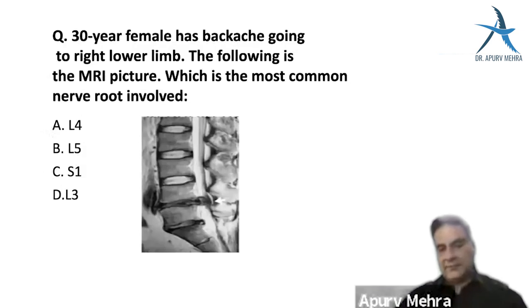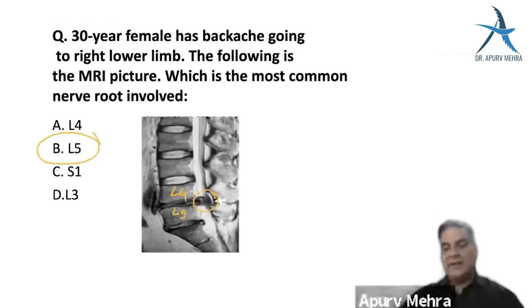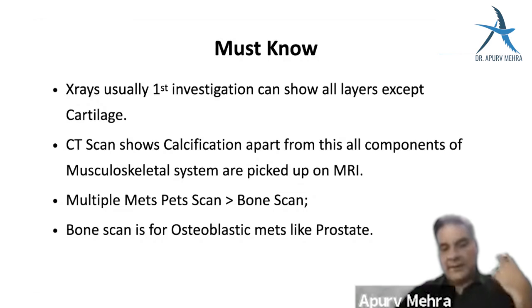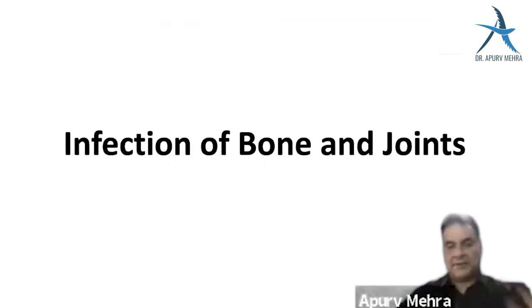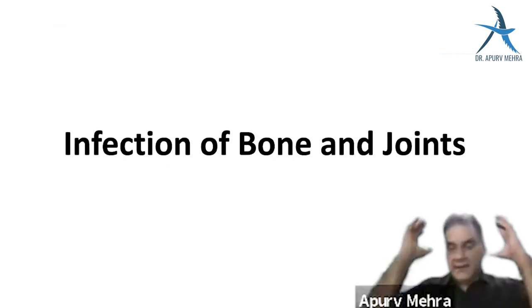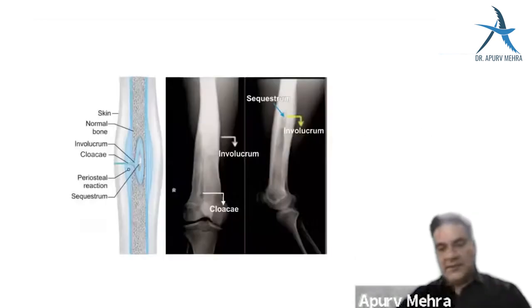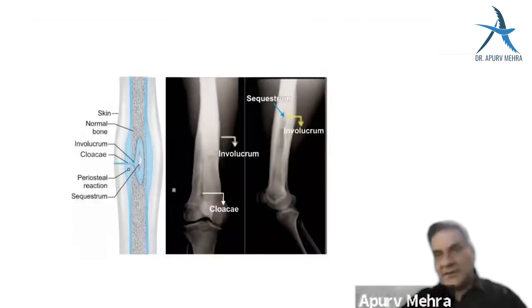Key MCQ review: the labeled structure is the capitulum; L4-L5 disc prolapse with the most common nerve root compressed being L5. X-rays are the first investigation and show everything except cartilage. CT shows calcification and cortex. MRI picks up most things. For multiple metastases, PET scan is more important than bone scan, but bone scan is good for osteoblastic lesions like prostate cancer.